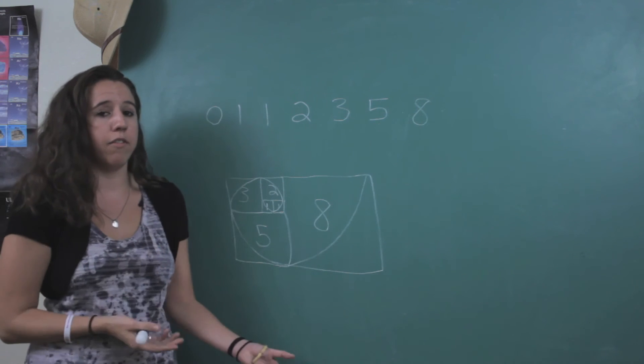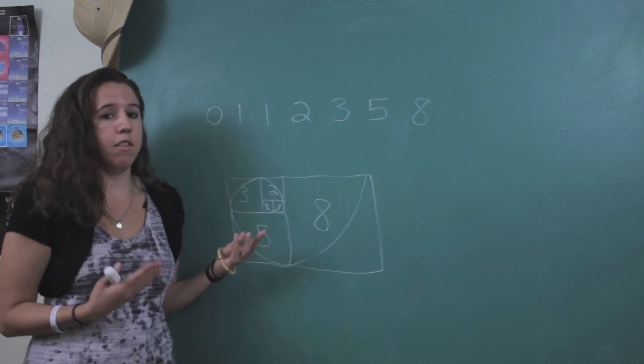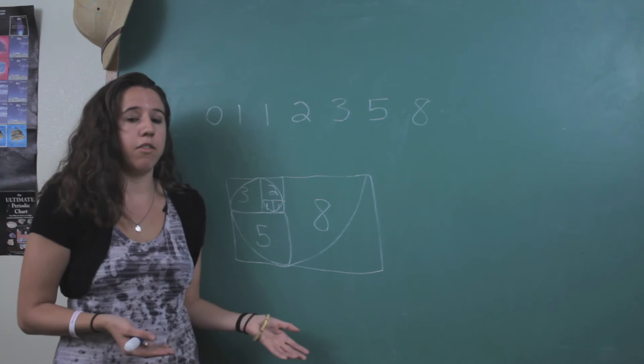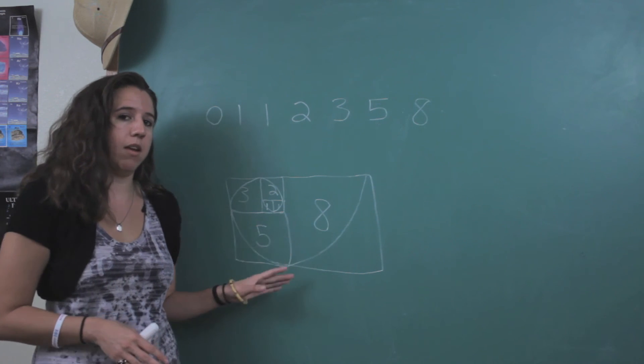And again, it's not a perfectly smooth spiral, but this is known as the Fibonacci spiral. And there are a lot of things in nature that mimic this shape.